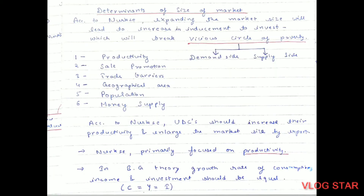According to Nurkse, expanding the market size will lead to increased motivation to invest, which will break the vicious circle of poverty. Nurkse identified six factors which determine the size of markets: productivity, sales promotion, trade barriers, geographical area, population, and money supply. The lesser the trade barriers, the more would be the investment, which will help in expanding the market size.